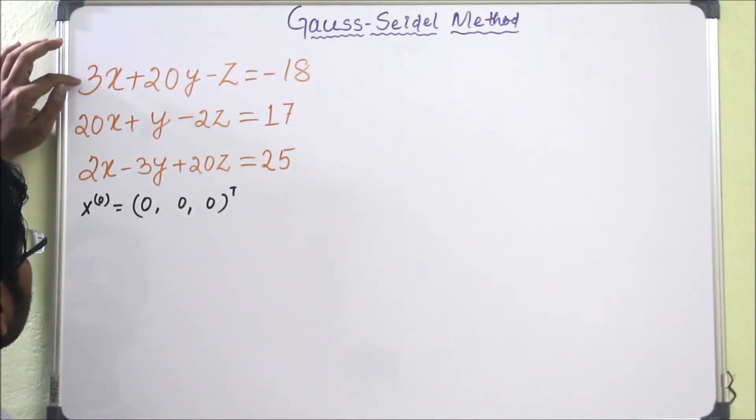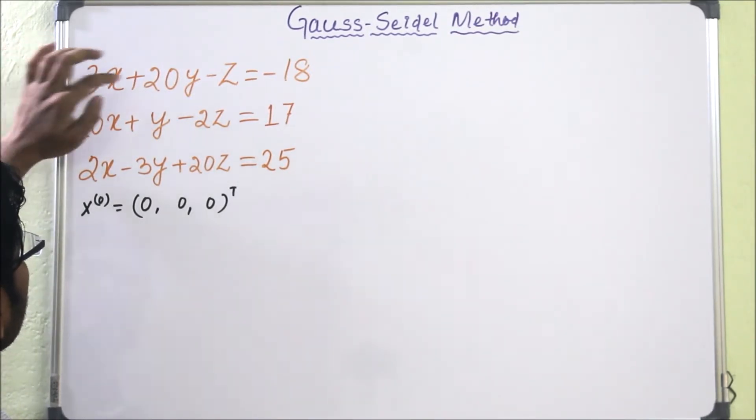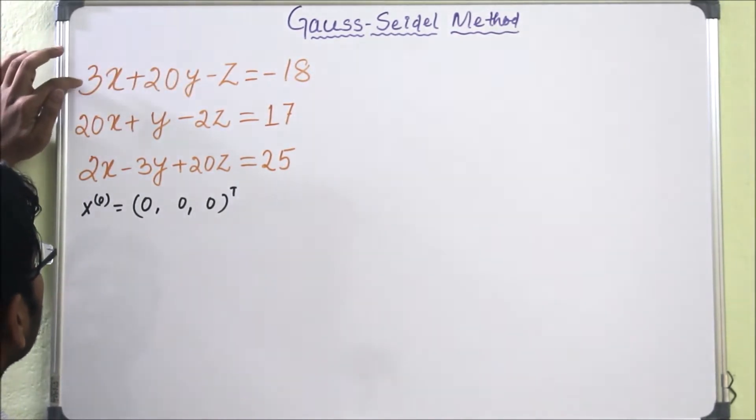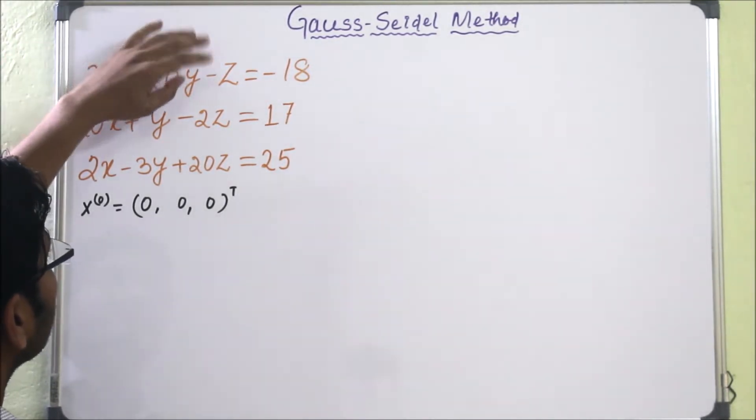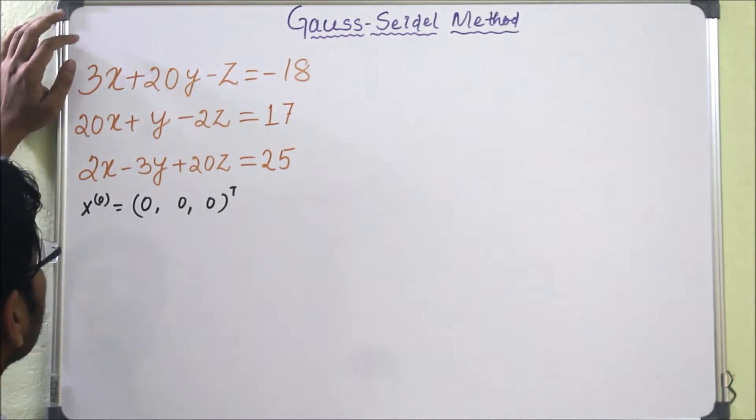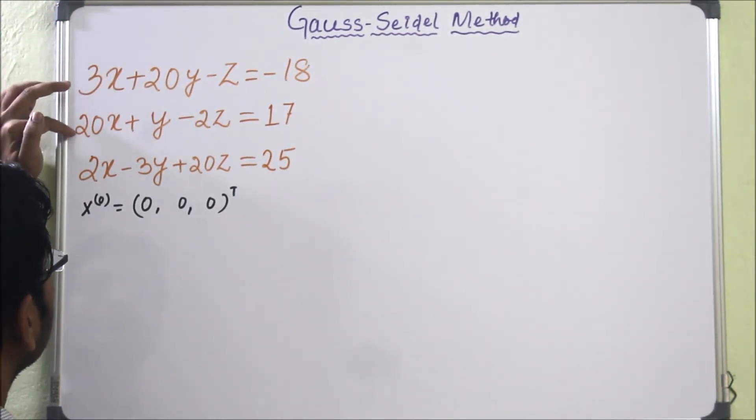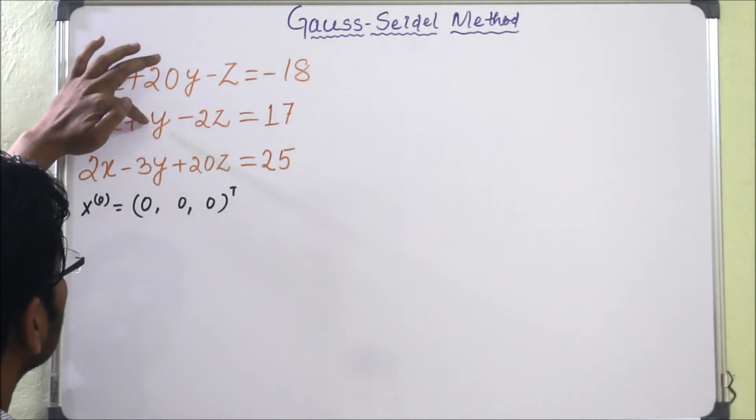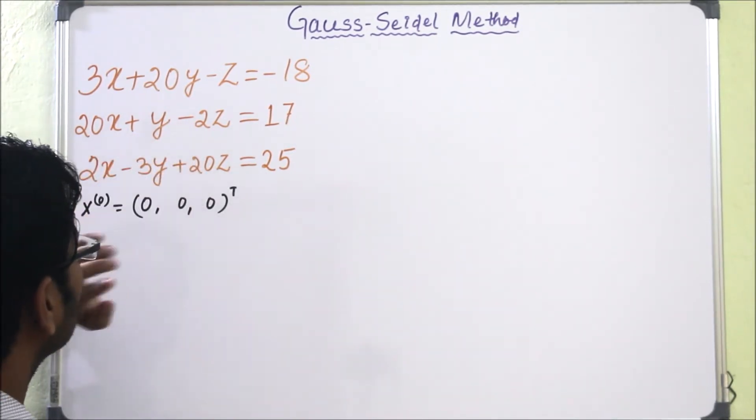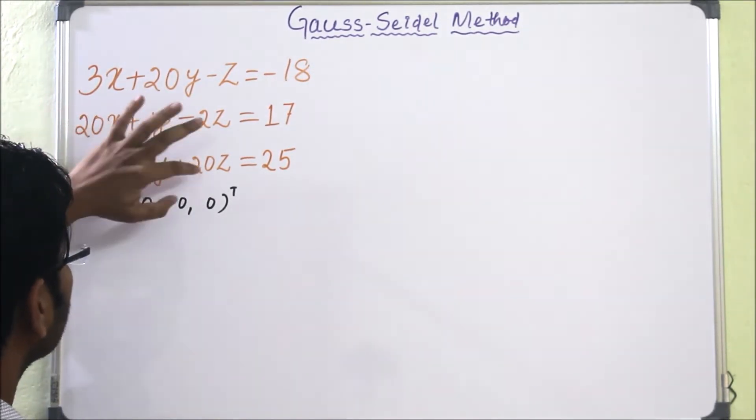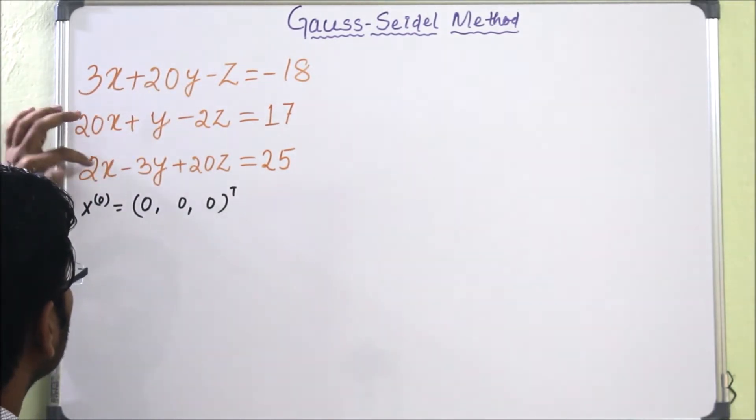So here we can see easily that 3 is not greater than 20 plus 1, that is 21. That means it is not obeying. Again if we see the second diagonal entry, it is 1. So 1 is not greater than or equal to 22. But the third is obeying because 20 is greater than 2 plus 3, which is 5.